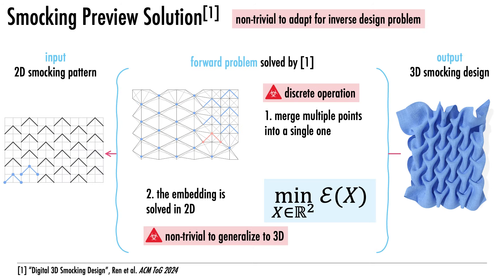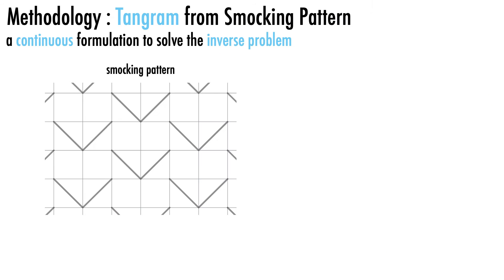Adapting previous work for the inverse design problem proves challenging, as the proposed method requires discrete graph operations and is restricted to solving part of the graph embedding in 2D. In this work, we introduce the tangram graph to address the inverse problem.